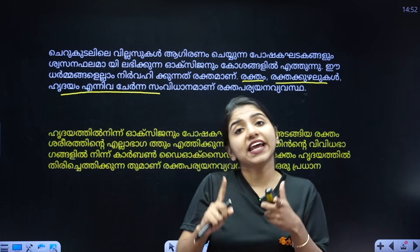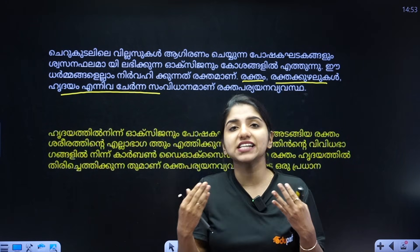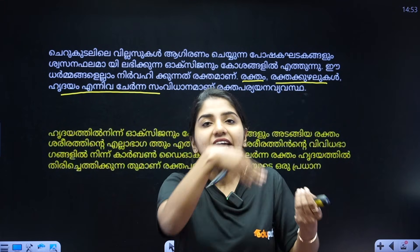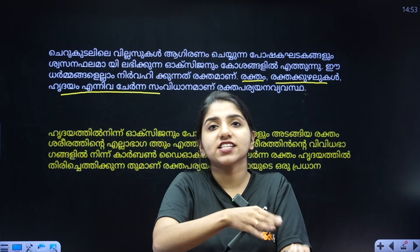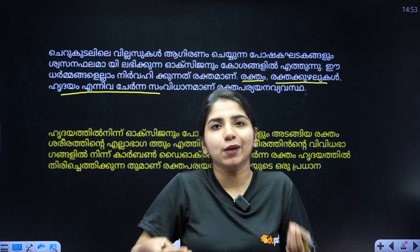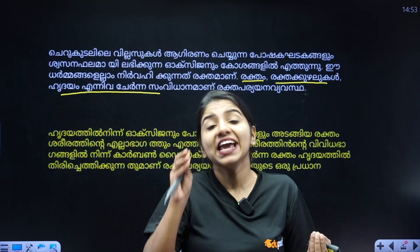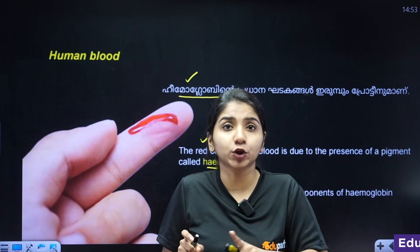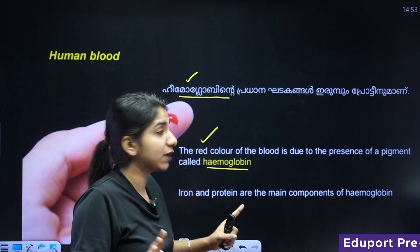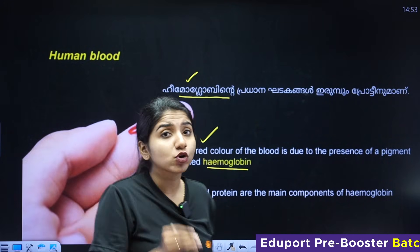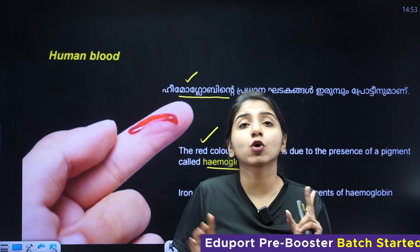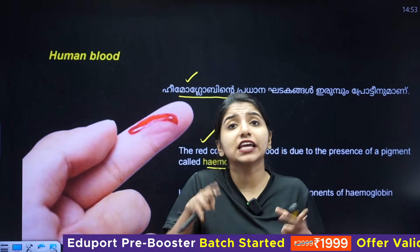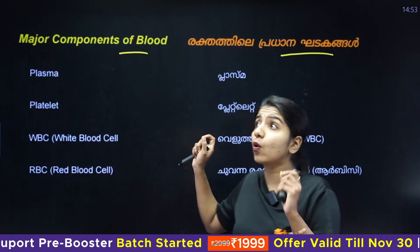The function of blood in your body includes transporting carbon dioxide. The color of blood comes from hemoglobin. What is hemoglobin? The four major components of our blood are plasma, platelets, WBC, and RBC.